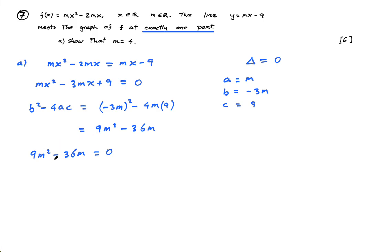At this point, you could divide by 9. I think that's probably the best thing to do. m squared minus 4m equals 0. I'm dividing everything by 9, including the 0. I'll put 0 to divide by 9 and 0. And now I can take out the m. So I have m minus 4 equals 0.